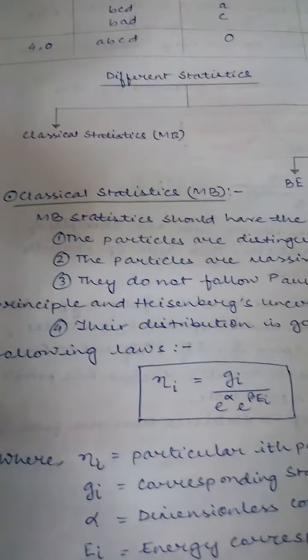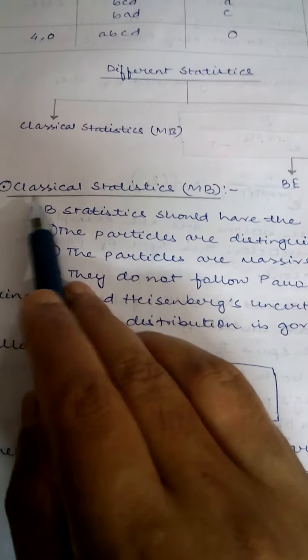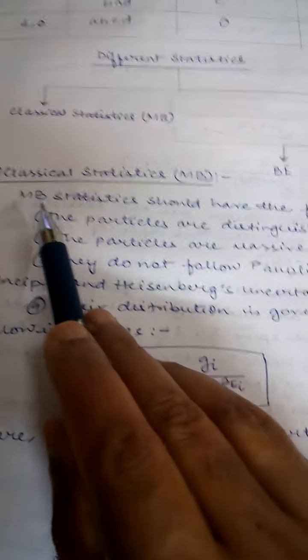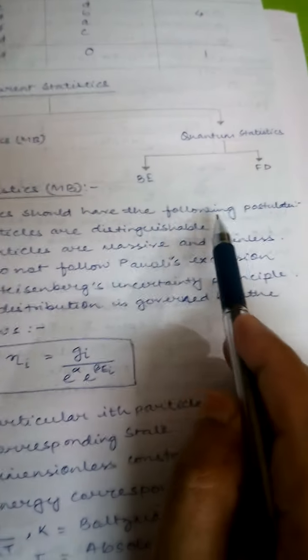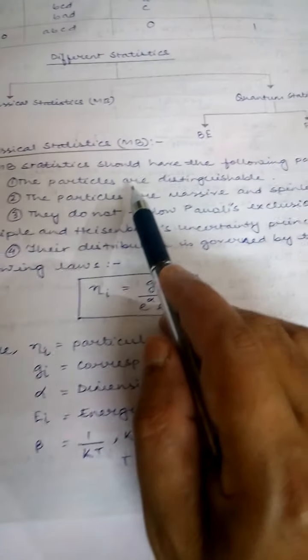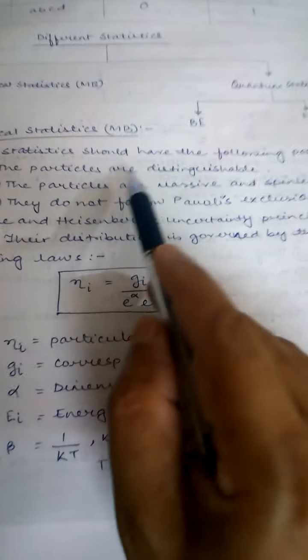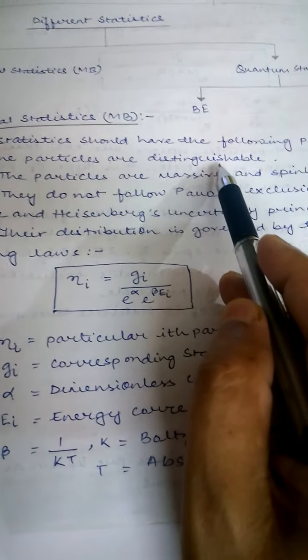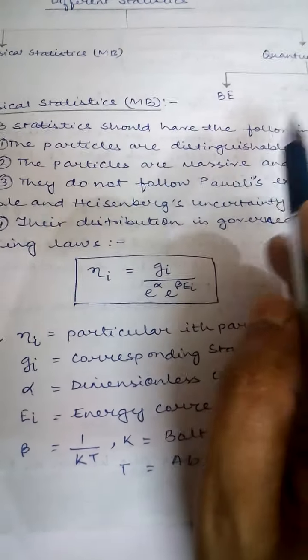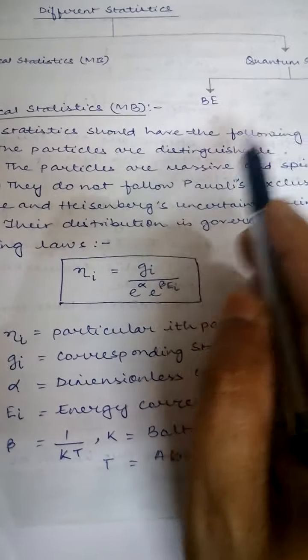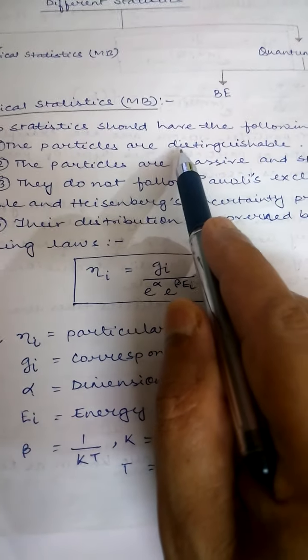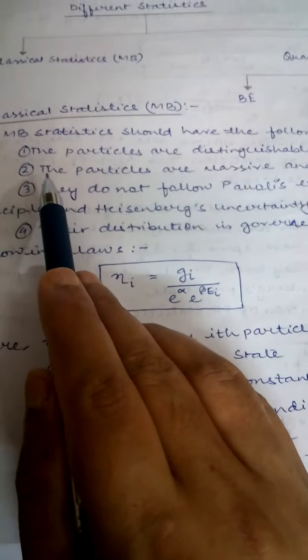Now let us describe each one by one. First, classical statistics or MB statistics — what are its postulates? The first postulate is that the particles are distinguishable. Particles can be distinguished from one another — suppose one is designated as A, another as B, a third as C, and so on.